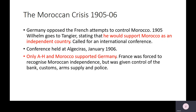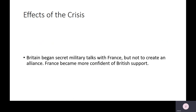The conference was held at Algeciras in southern Spain in January 1906, and this totally backfired on the Germans. At the conference, only Austria-Hungary and Morocco themselves supported Germany. France was technically forced to recognize Moroccan independence — Morocco retained its own sultan — but in practice France was given far more extensive control: control over the Moroccan bank, the customs and excise system, arm supply, and even the Moroccan police force. So in reality, the French ended up gaining increased control, and this crisis left important after-effects.